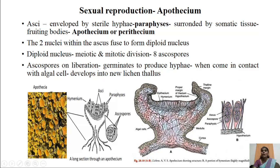Ascospores on liberation germinate to produce hyphae. When these hyphae come in contact with an algal cell, they develop into a new lichen thallus. Sexual reproduction in ascolichens results in the formation of two types of fruiting bodies: apothecium and perithecium. Apothecia are small cup-like structures developed on the surface of the lichen thallus.